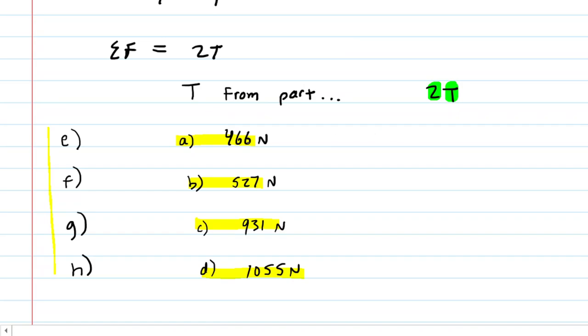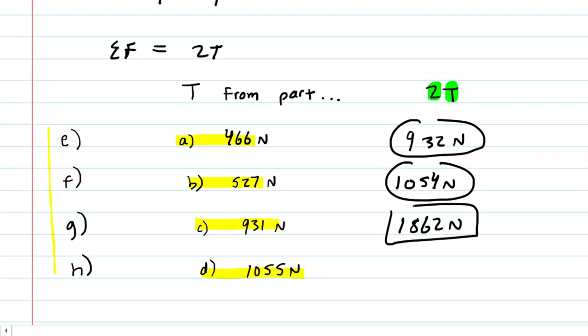And so if we double the 466 newtons, then the correct answer to part E is going to be about 932 newtons. So that is the correct answer to part E. For part F, again, just doubling that original tension force from part B, we would get 1,054 newtons, and we just continue doubling our previous answers. So for part G, we're going to get the year in which I was born, 1862 newtons. And then finally, in part H, we have 2,110 newtons. So these are the correct answers to parts E through H.